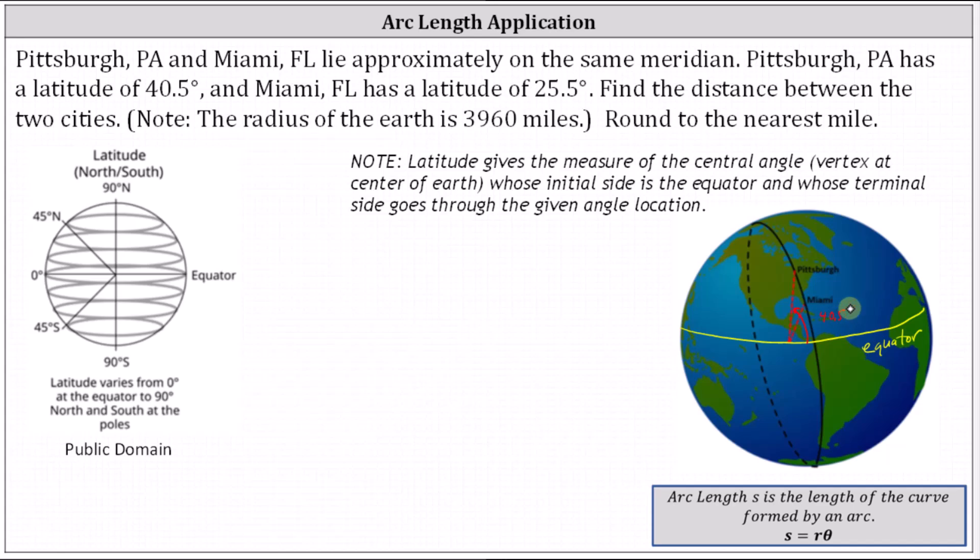And because the latitude of Miami is 25.5 degrees, this angle here is 25.5 degrees. To find the distance between the two cities, we need to find this arc length between the two cities.